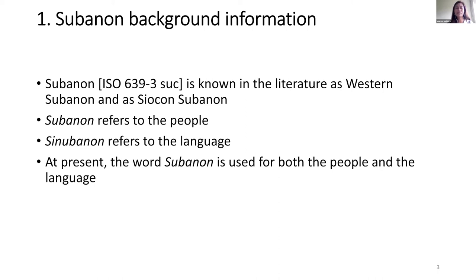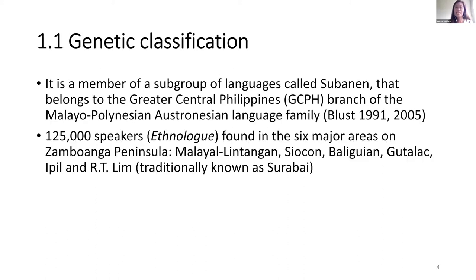Subanon background information. Subanon is known in the literature as Western Subanon and Ashokon Subanon. Subanon refers to the people, and the term Sinubanon refers to the language. However, at present, the word Subanon is used for both the people and the language. Subanon is a member of a subgroup of languages called Subanon that belongs to the greater Central Philippine branch of the Malayo-Polynesian-Austronesian language family. According to Ethnologue, it has about 125,000 speakers found in six major areas on the Zamboanga Peninsula: Malaya-Lintangan, Shokon, Baligian, Ipil, and Artilin.